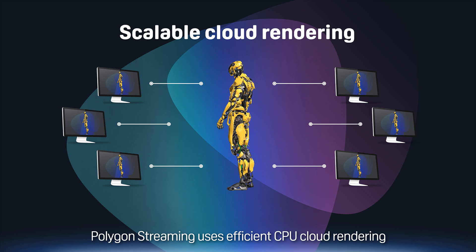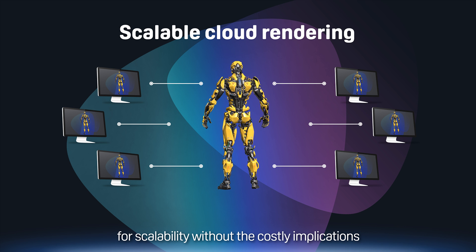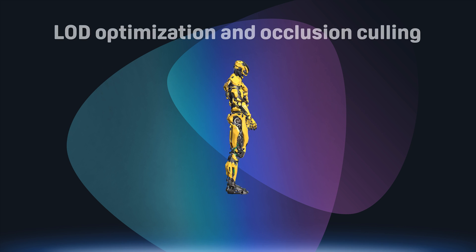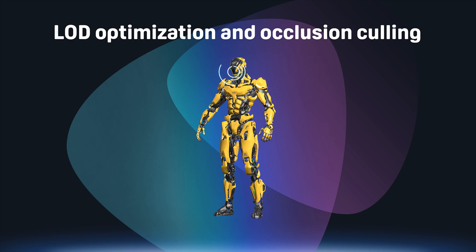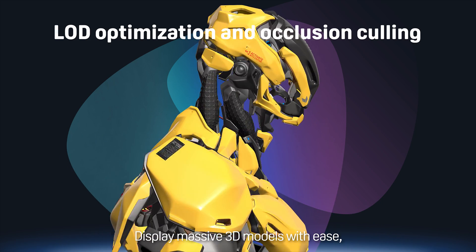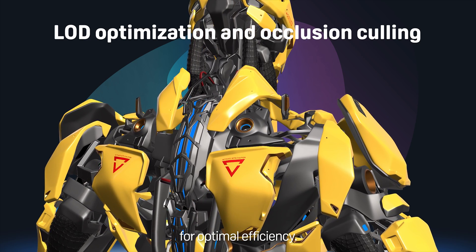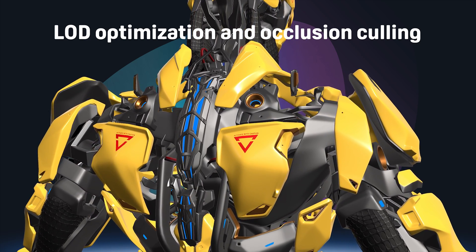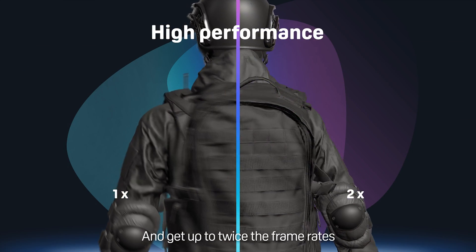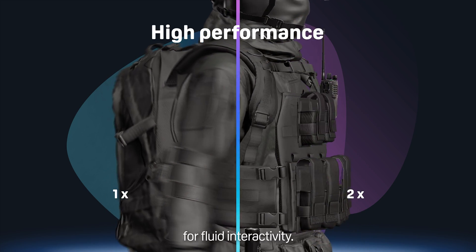Polygon Streaming uses efficient CPU cloud rendering for scalability without the costly implications of GPU-based pixel streaming. Display massive 3D models with ease, streaming only what's visible for optimal efficiency. Get up to twice the frame rates compared with traditional 3D workflows for fluid interactivity.